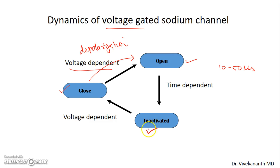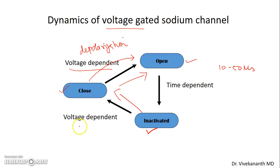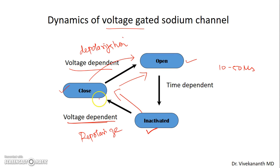From this inactivated state to get opened again, it has to be closed first, then it can be opened again. For this inactivated-to-closed change of state, it again requires a voltage change — the membrane has to repolarize for the voltage-gated sodium channel to become closed again.